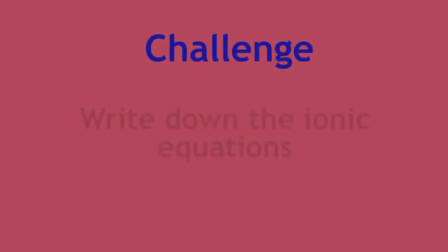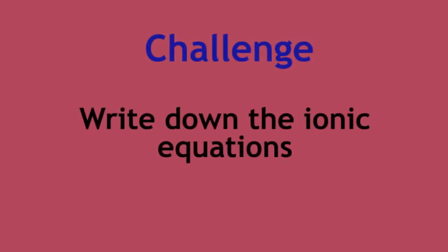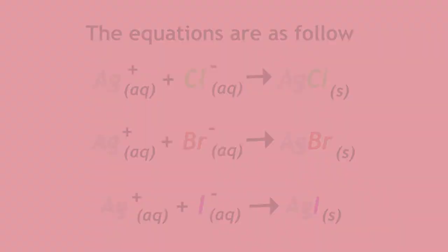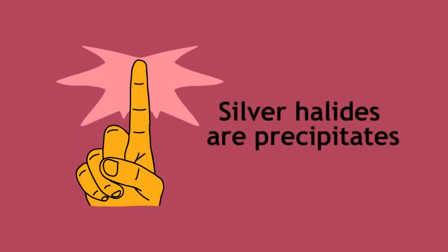Write down the ionic equations for the precipitation reactions that we have learned about. Resume the video once you are done. The equations are as follows. Remember that since the silver halides are precipitates, the subscript is S in round brackets.